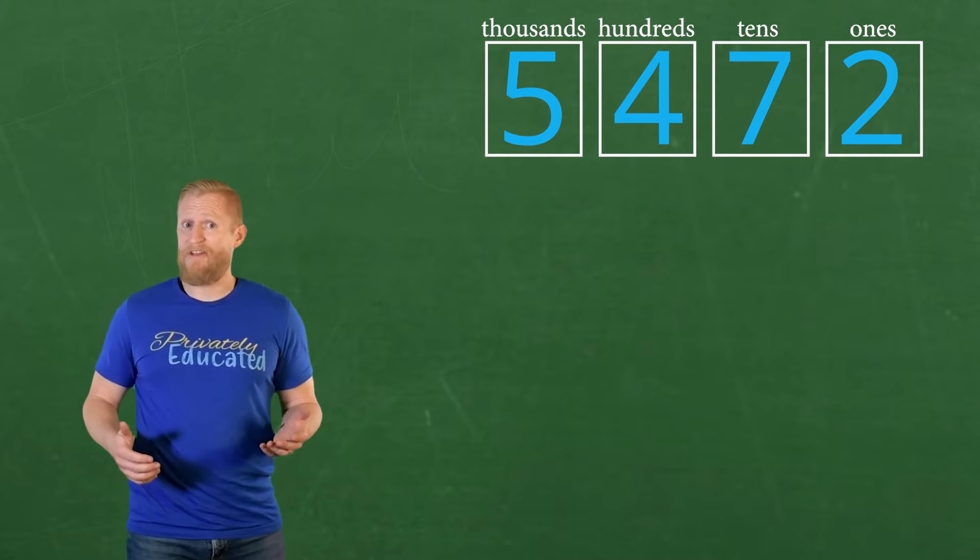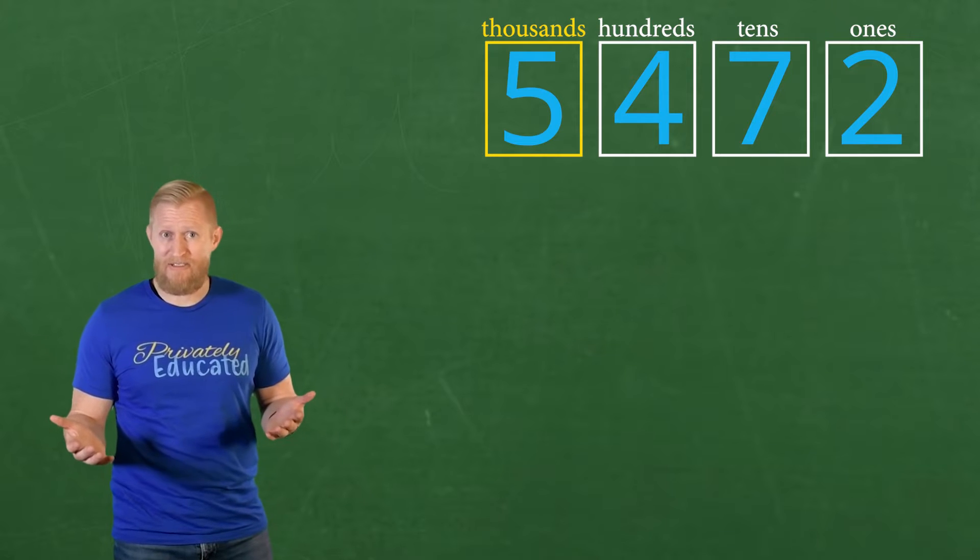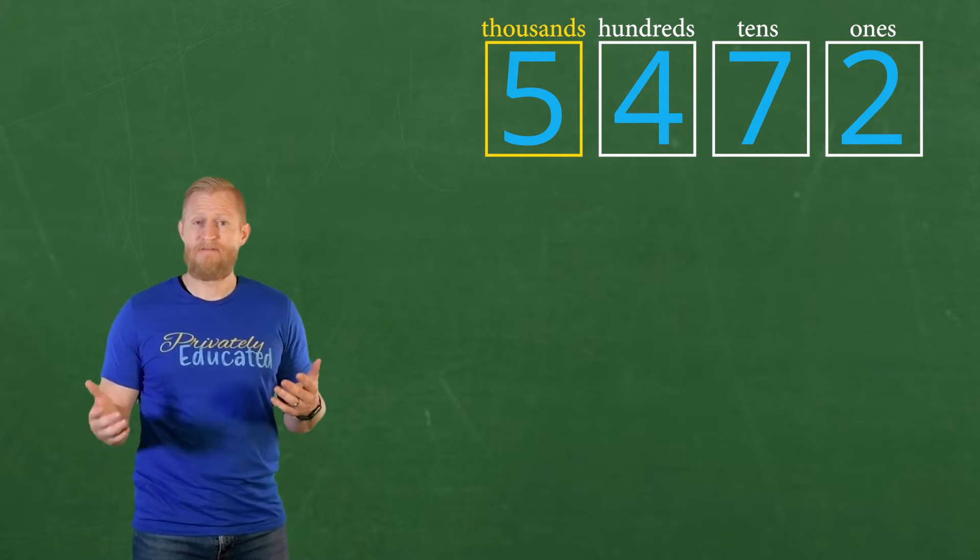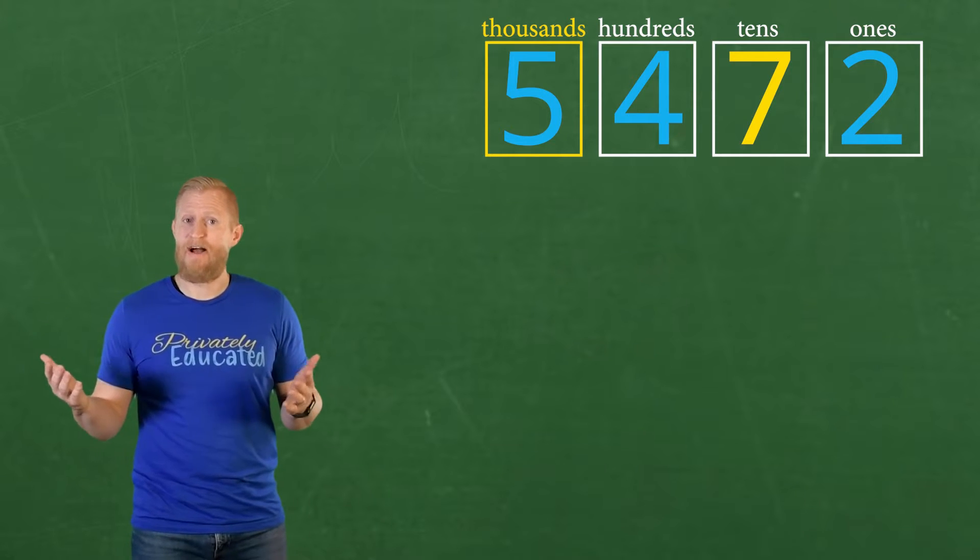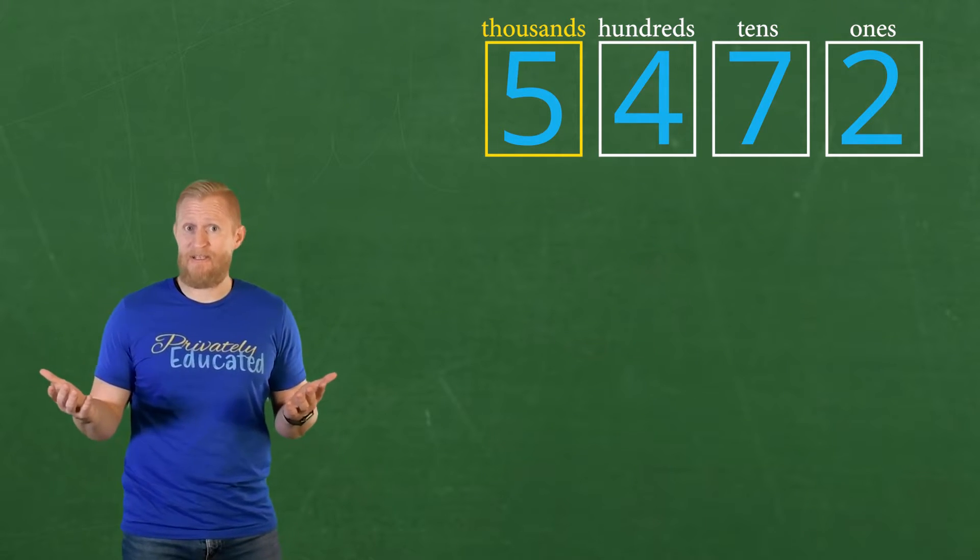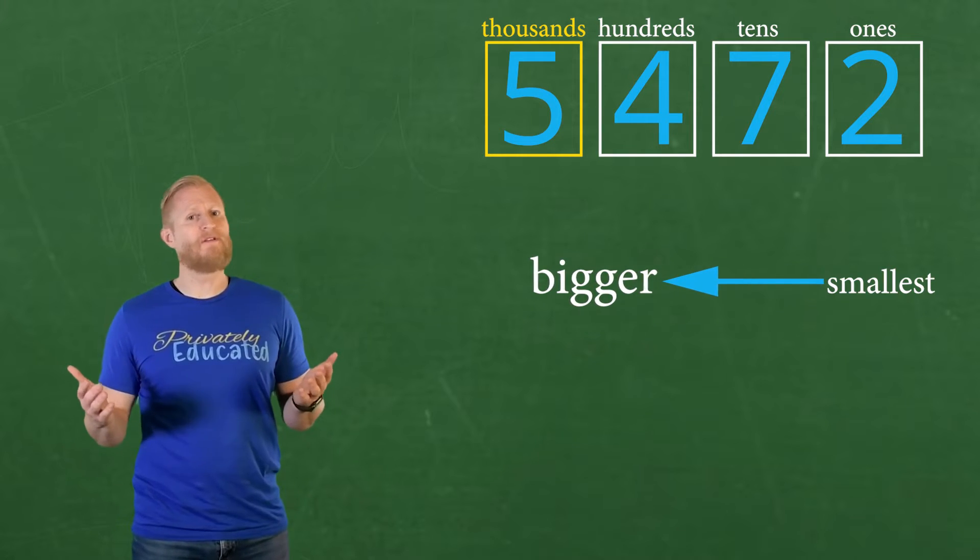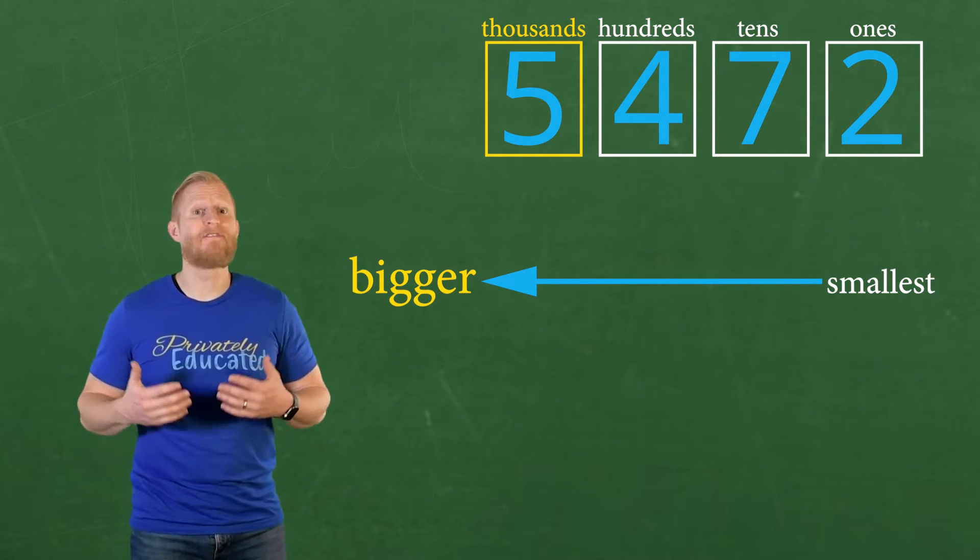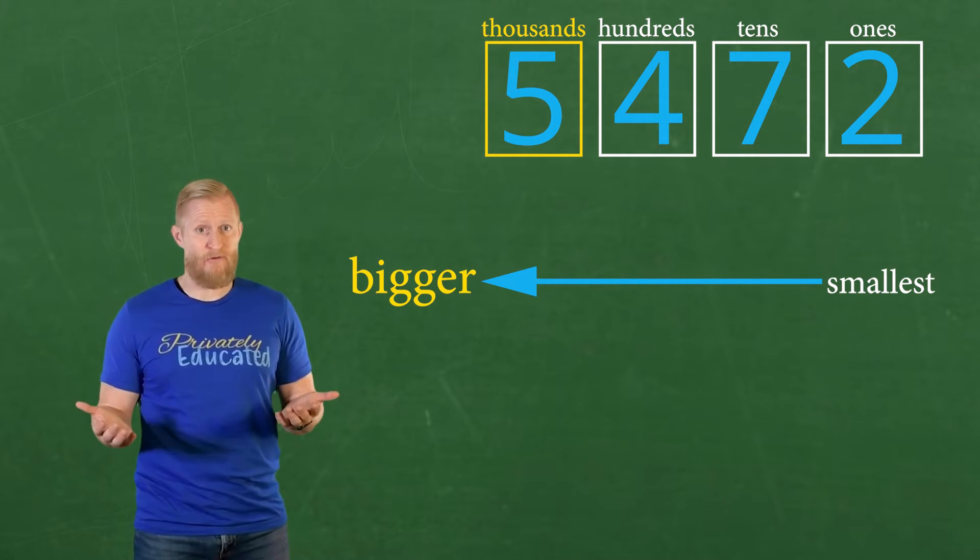The biggest number is on the left. I don't mean the highest digit, which would be, let's see, two, four, five, it would be seven here. I don't mean the highest digit, I mean the biggest place value, which is always the place value at the farthest left. In our case, the biggest place value is the thousands group.